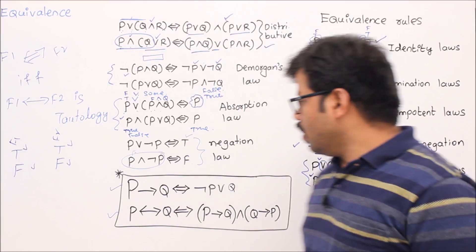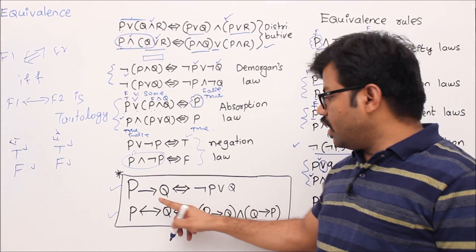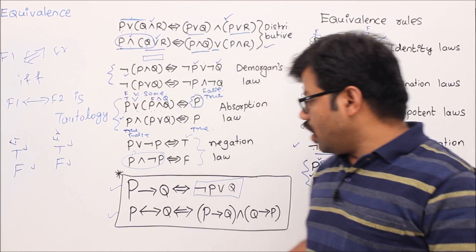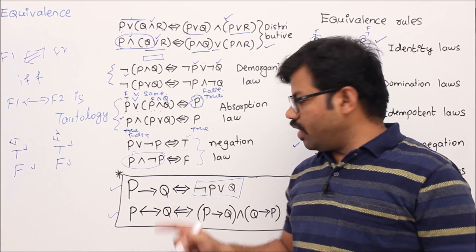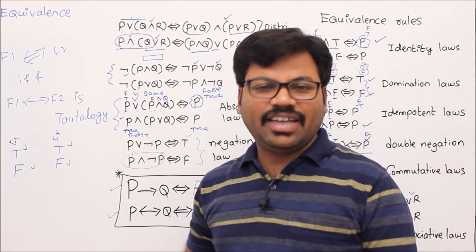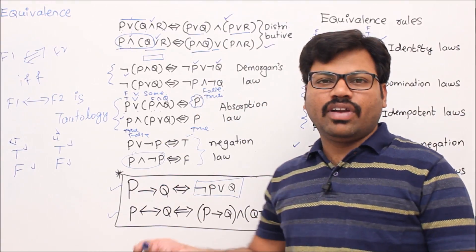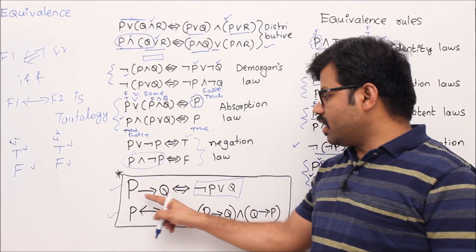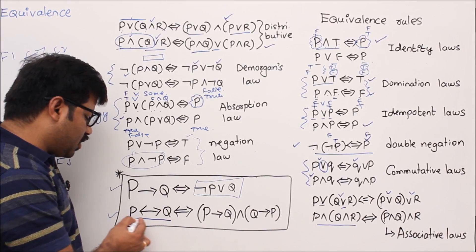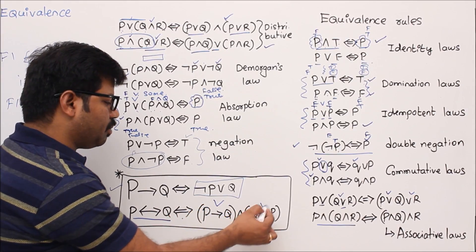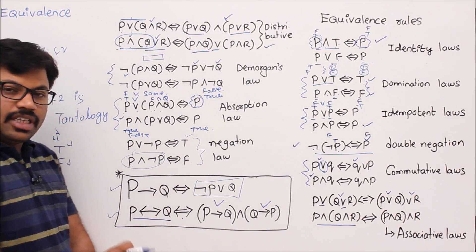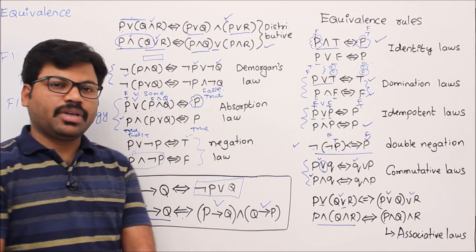Now some more important rules that help in solving simplification problems. From now onwards, whenever you have p→q, that is exactly equivalent to ¬p∨q — always remember it. If you have doubt, draw the truth table for both and you will see they are equivalent. One more: p↔q is equivalent to (p→q)∧(q→p). We can cross-check with a truth table, but remember: p↔q ≡ (p→q)∧(q→p).